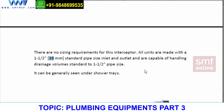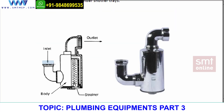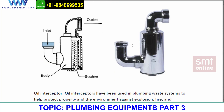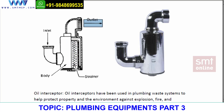The hair interceptor is directly connected under the shower tray or floor drain in the bathroom. Think of it this way: the water enters from the top, and hairs get stuck in the strainer. Only water passes through the holes. When the strainer is full, water still flows out. There is also a clean-out plug here used for maintenance purposes.